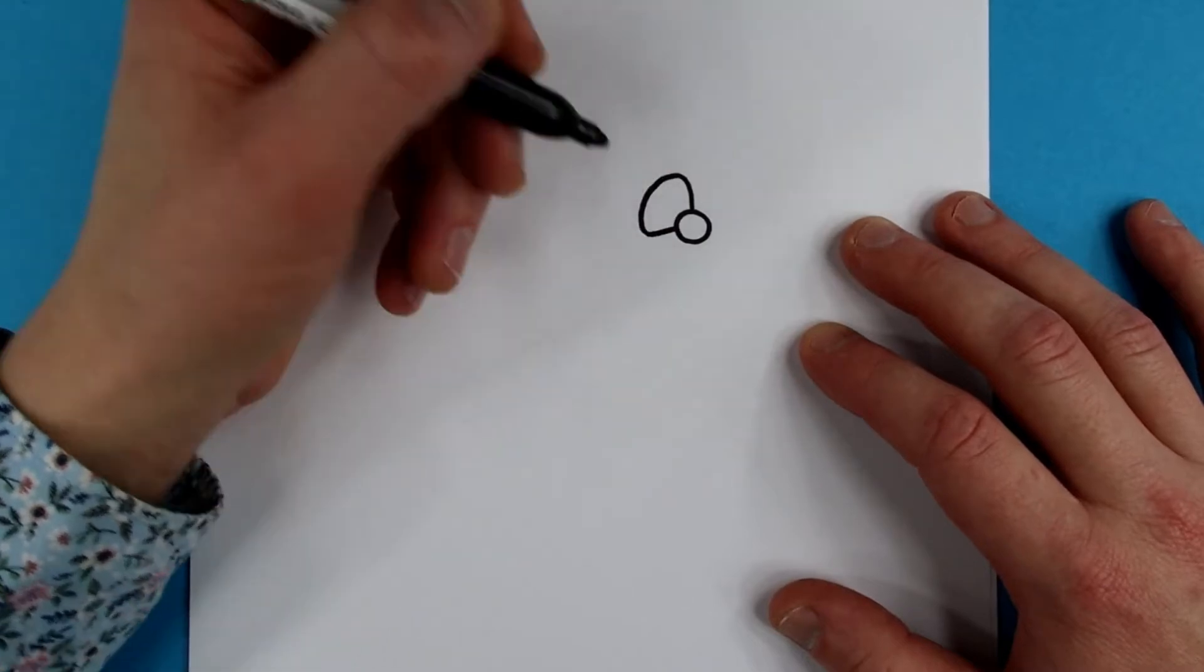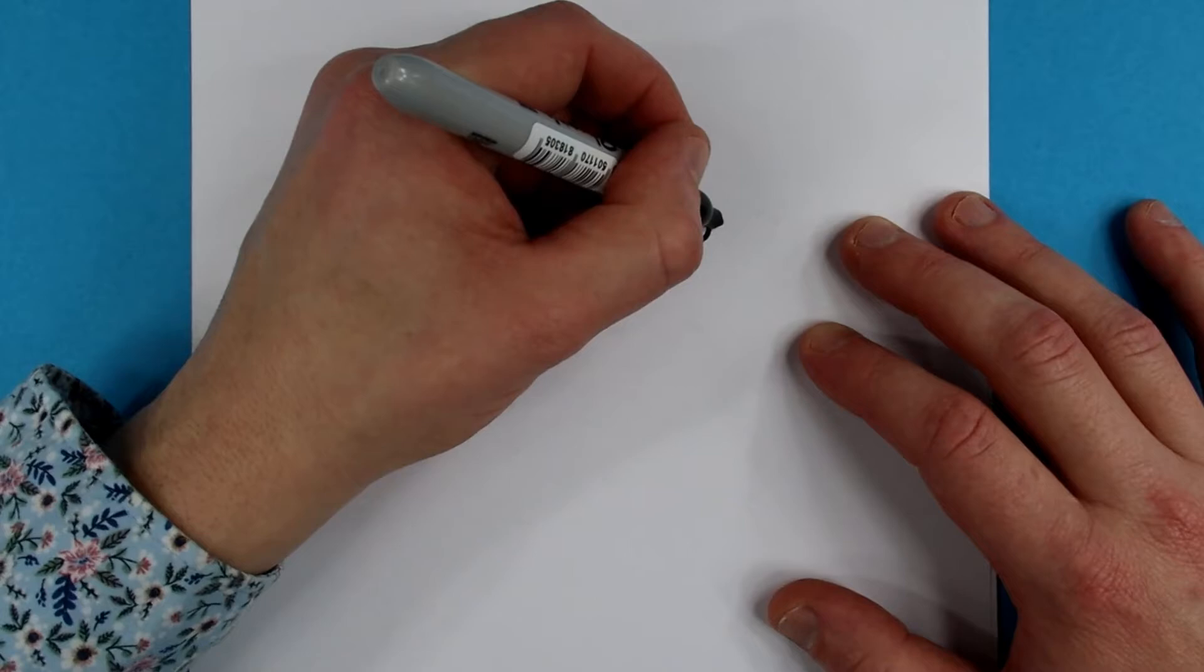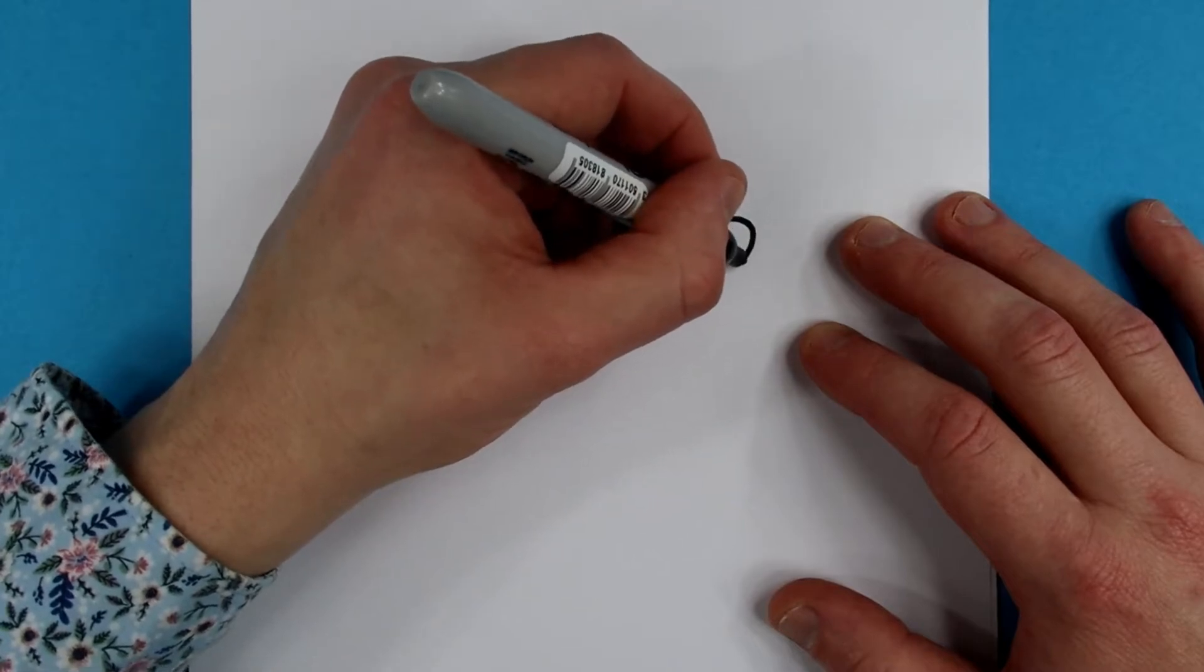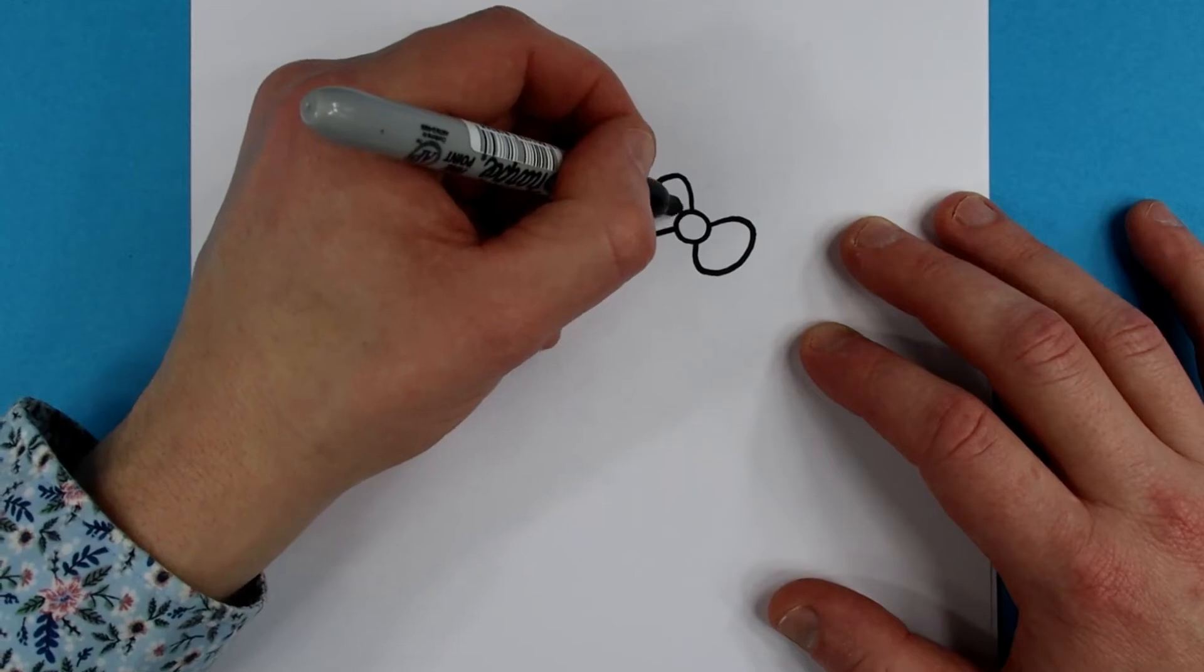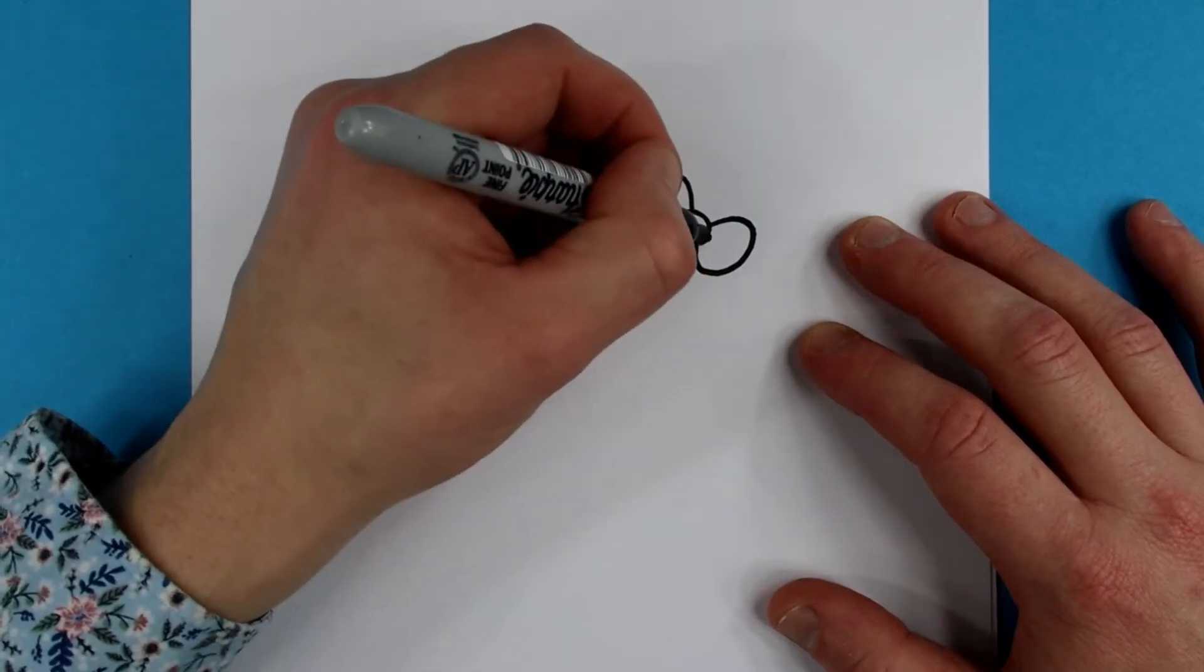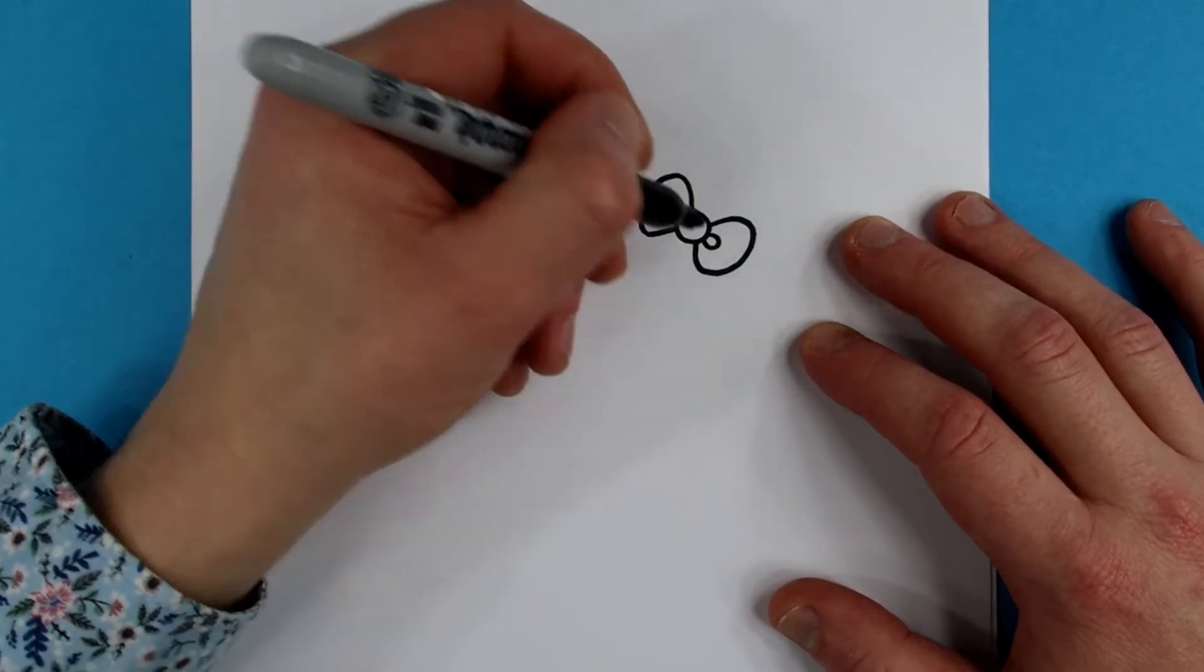and towards the circle again, and the other side the same. Like this. Now for two circles over here, and one over there.